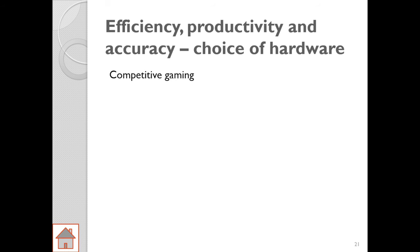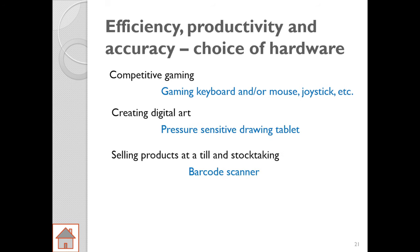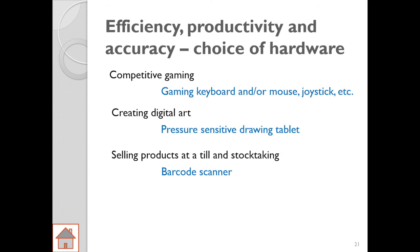Consider competitive gaming — there's so much to choose from: the right gaming keyboard, the right mouse, the right joystick. Maybe you're creating digital art or selling products at a till. All of this requires us to do a little bit of thinking before we end up buying the products.